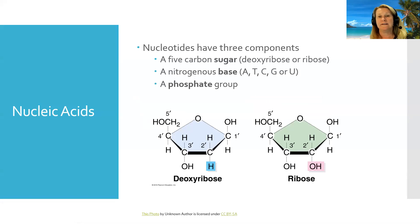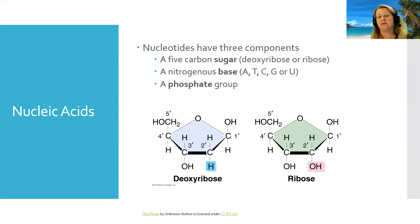The five-carbon sugar is different in DNA and RNA, and the nitrogenous bases are a little bit different as well. A, C, and G are found in both DNA and RNA. T is found only in DNA, and U is found in RNA. But the phosphate group is the same in both.